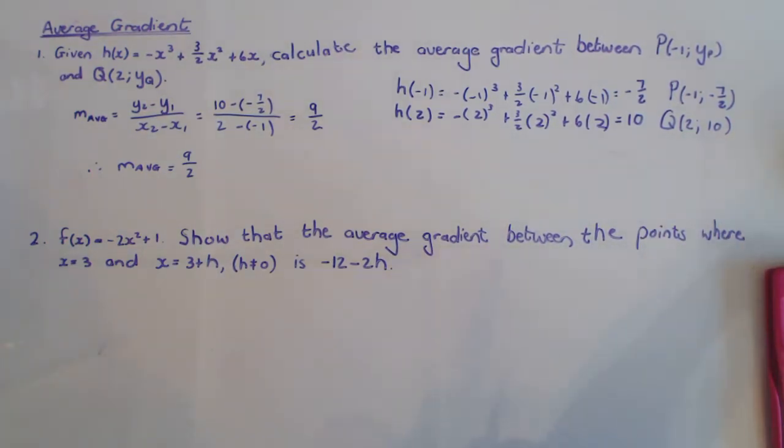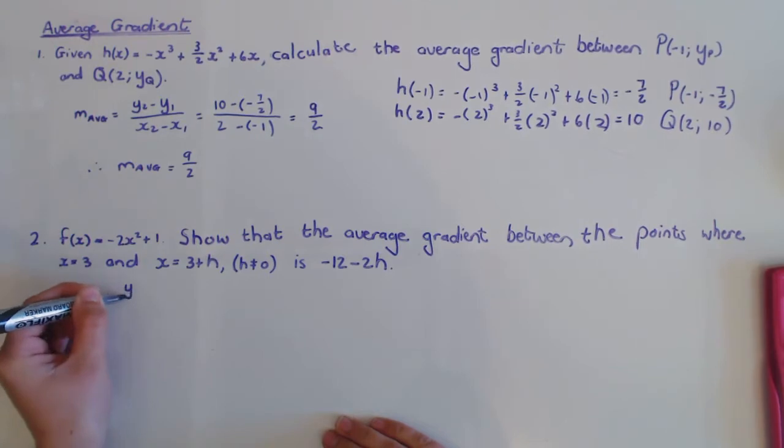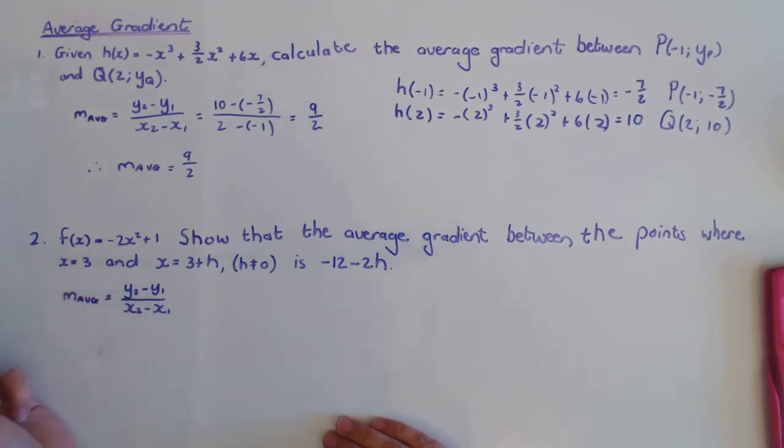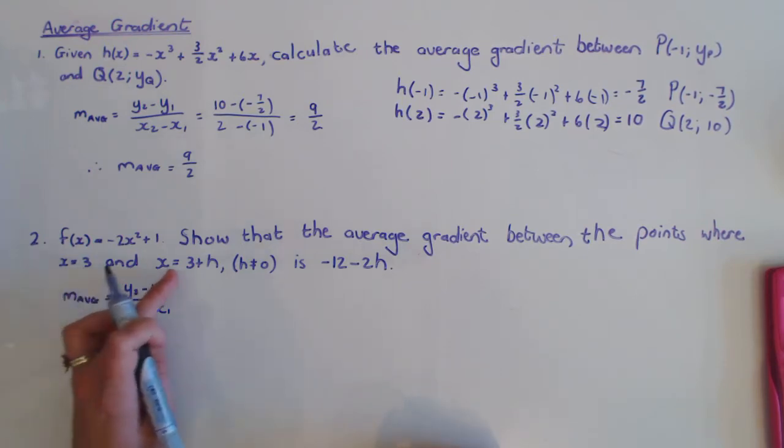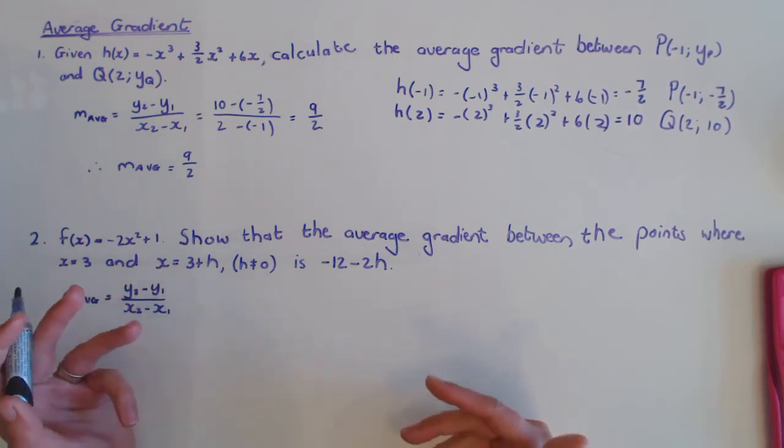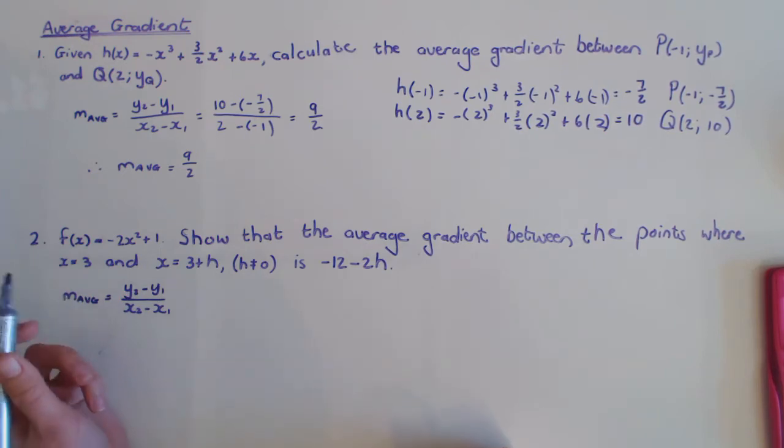So now the average gradient, as I said, you can still just use the formula y2 - y1 over x2 - x1, and you'll see in the notes attached to this video that I say there that notice when it's an x and an x + h, that it looks like the formula for deriving from first principles a lot without the limit involved. So that's actually where that formula comes from.